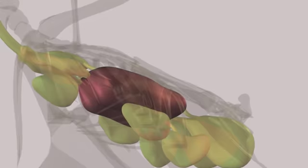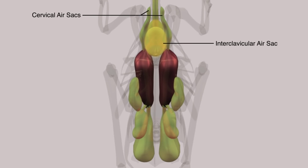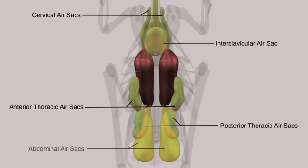These air sacs include a pair of cervical sacs, a single interclavicular sac, a pair of anterior thoracic sacs, a pair of posterior thoracic sacs, and a pair of large abdominal sacs.